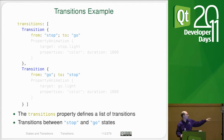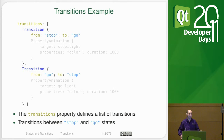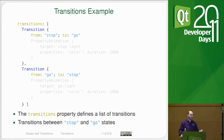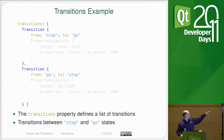If you want multiple targets — for example, both lights fading in and out — you would need a second property animation. You can also nest these in parallel animations and sequential animations, so if you want things to happen in a certain order or animate at the same time, you can wrap them in sequential and parallel animation containers.